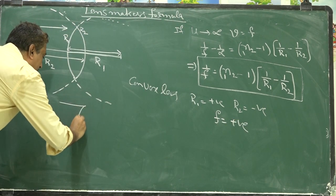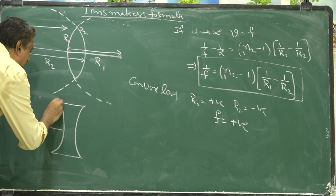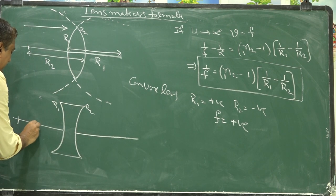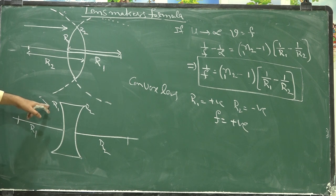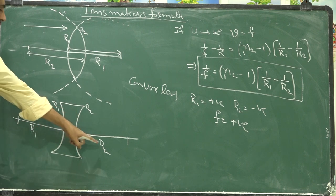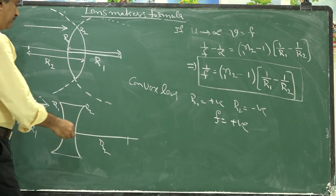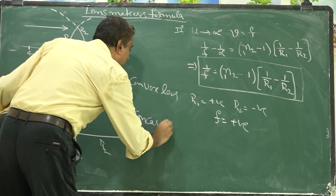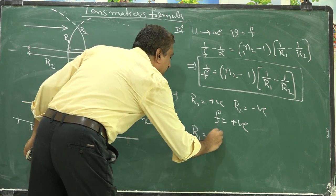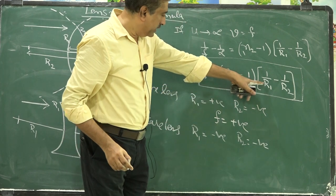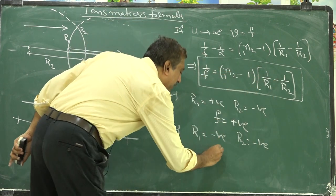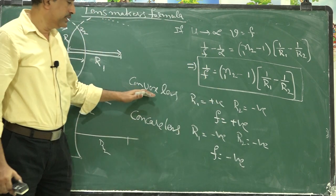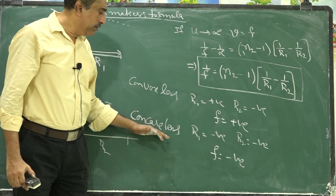For a concave lens, R1 is opposite to the direction of light so R1 is negative, and R2 is in the direction of propagation so R2 is positive. Both terms contribute a negative result, making f negative for a concave lens. Therefore, focal length is positive for a convex lens and negative for a concave lens.